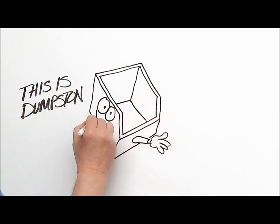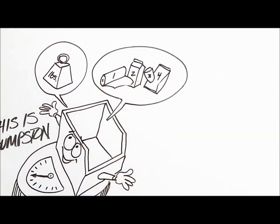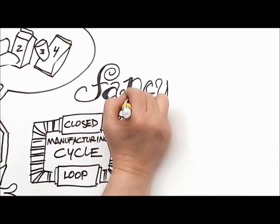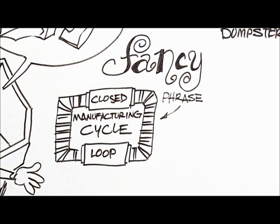This is Dumpston. He's been watching his weight lately, shedding a few pounds by counting his recyclables. You see, his company, Intergroup International, runs a closed-loop manufacturing cycle. A fancy phrase that basically means portion control for dumpsters. Here's how it works.